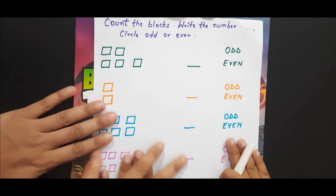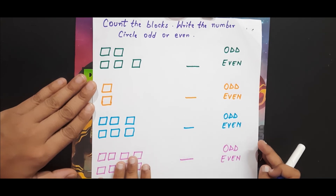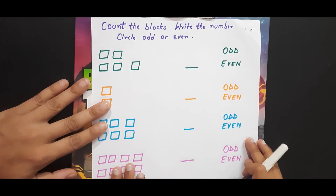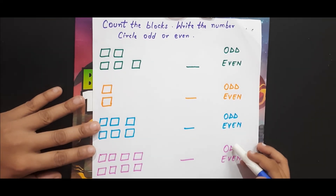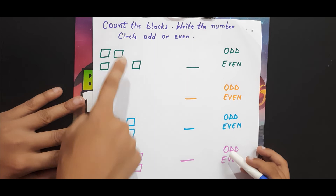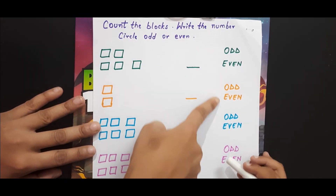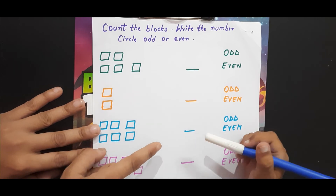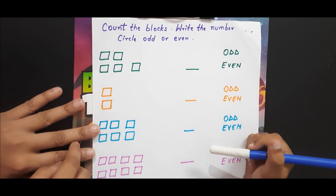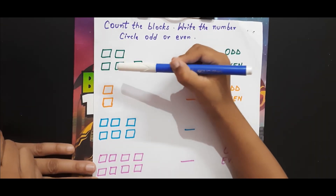Now here is a small worksheet which I have given to my kid to make him understand even more. You can also go for this worksheet once the kid understands the basic concept of odd and even. Here it says 'count the blocks' — you have to count all the blocks and write the number in the given space, then find out whether it is odd or even by circling the option. So let's go for the first one — one, two, three, four, five. How many blocks? Five — write the number five.